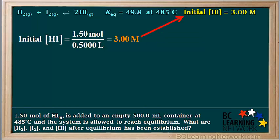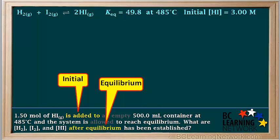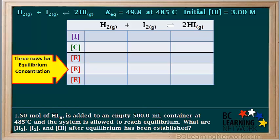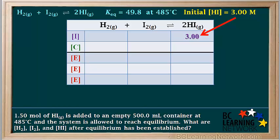We'll note that the initial concentration of HI is 3 molar. Because we're given initial information and asked for equilibrium information, we must use an ICE table, or ICE box as some teachers call it. In this type of problem, where we're given only initial values and KEQ with no equilibrium values, it's best to use three separate horizontal rows for equilibrium concentrations.